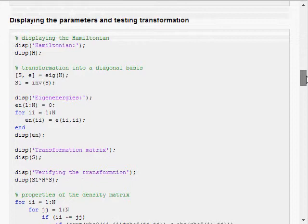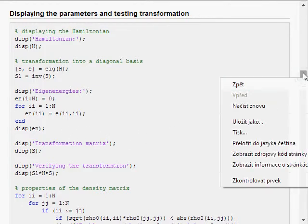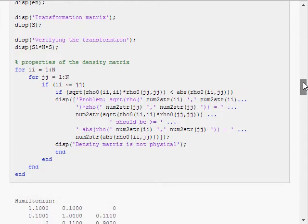Now here is something more. I still show the Hamiltonian eigen energy transformation and I verify the transformation. But I also verify that density matrix that I have created is fine.